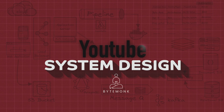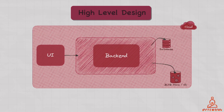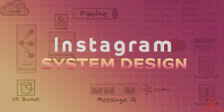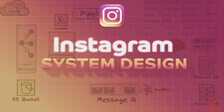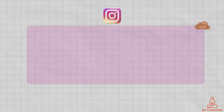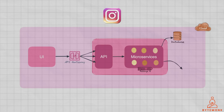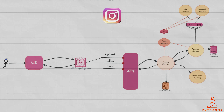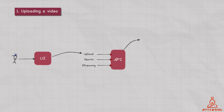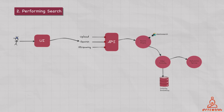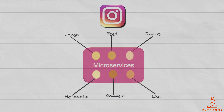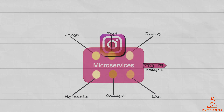In my previous video, we designed YouTube, a video sharing platform, and it consisted of several components. In this video, we'll design Instagram, which is one of the most popular photo sharing sites. It also includes several components, including an image upload service, a feed service, a notification service, and a search service. While in the YouTube system design I focused on video streaming and search, in Instagram we prioritize image sharing and social interactions through its feed and notification services. So let's get started.